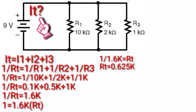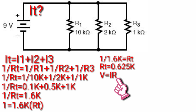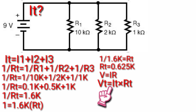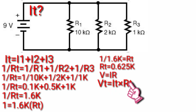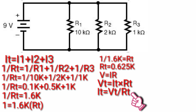To calculate the total current using Ohm's Law formula: voltage is equivalent to current times resistance. Simply put, total voltage VT is equivalent to total current IT times total resistance RT. Then, simplifying the formula to calculate the total current: IT is equivalent to VT divided by RT.